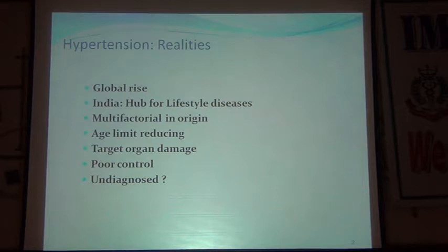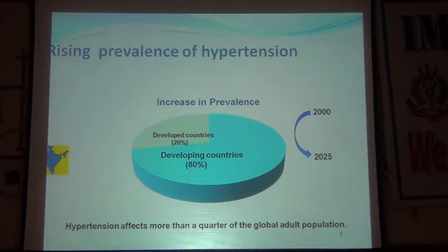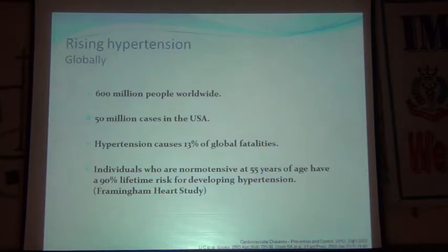Most cases start treatment but control is not good, and that leads to target organ damage. Most cases are still undiagnosed. In this slide you can see from 2000 to 2025 there will be a steep increase in prevalence — in developing countries it increases 80 percent and in developed countries 20 percent.